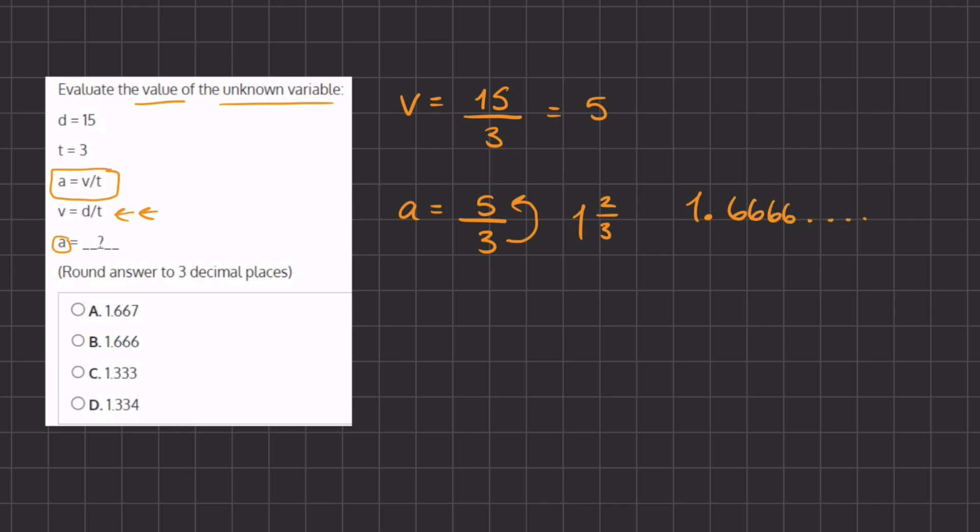We need to stop it after three decimal places like it was asked in the answer, so we need to round. We're going to go to our third decimal place and look one place over, and see that we have to round up. So we have 1.667.